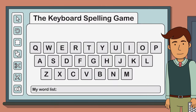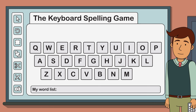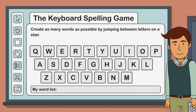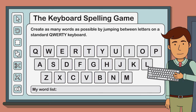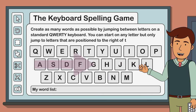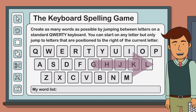Here's how to play. The aim of the keyboard spelling game is to create as many words as possible by jumping between letters on the keyboard. The most important rule of this game is that you can only jump to letters that are positioned to the right of your current letter.